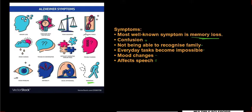It doesn't mean that if you are constantly misplacing things that you have Alzheimer's — that is a very common thing that happens. But if you have the majority of these symptoms and you are older and there's a history of Alzheimer's disease in your family, you might want to get that checked out.